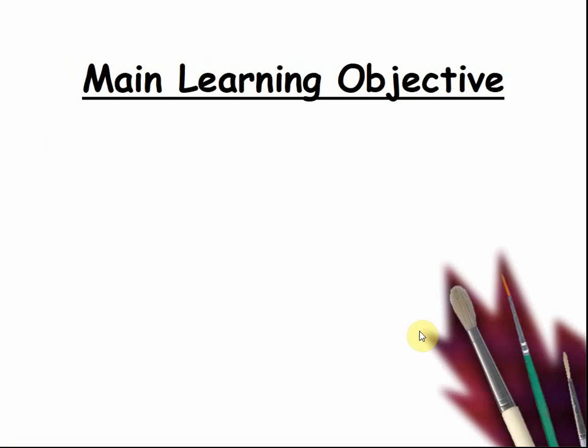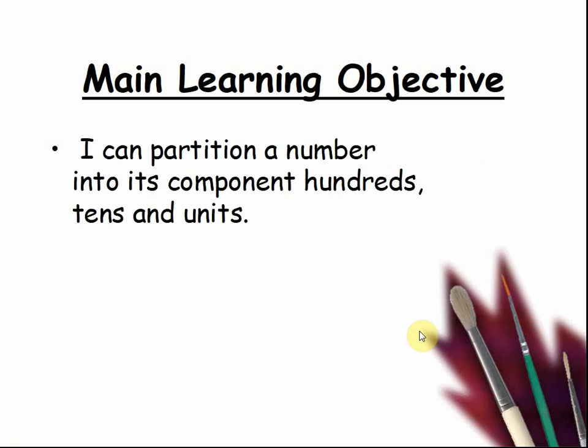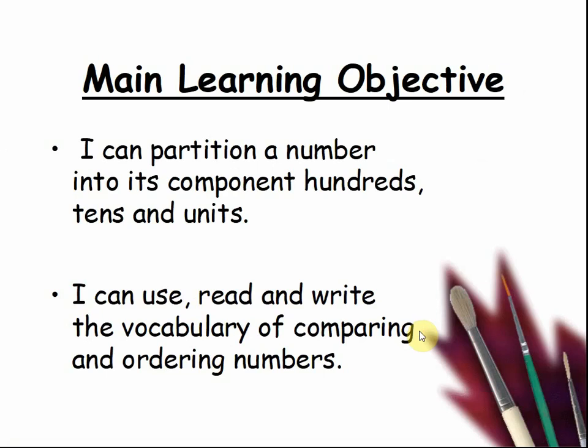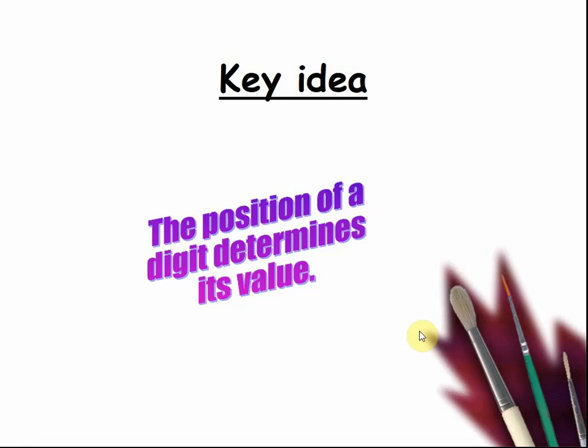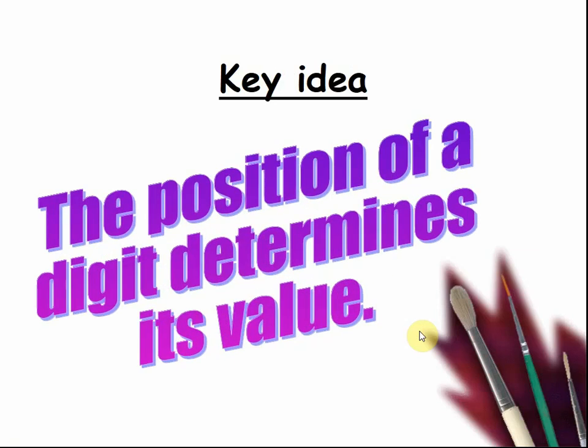Here is our main learning objective. I can partition a number into its component hundreds, tens, and units. I can use, read, and write the vocabulary of comparing and ordering numbers. Today's key idea, the position of a digit determines its value. So, the more right it is, the bigger the number.